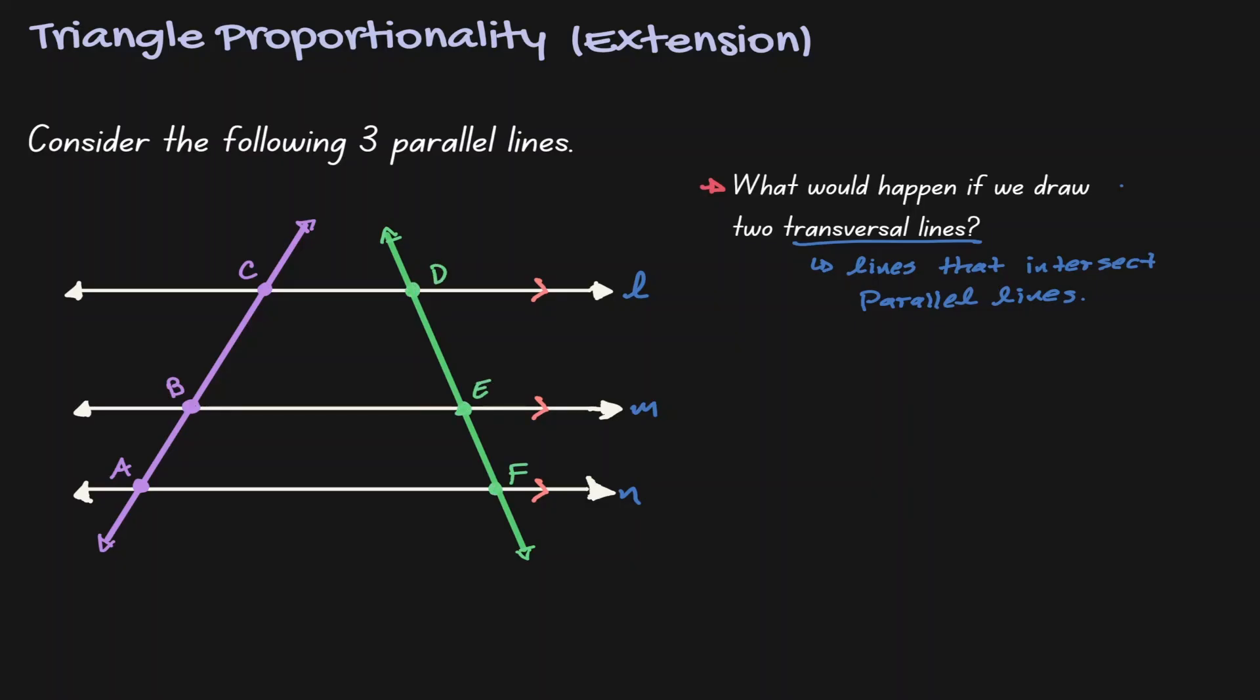Because parallel lines are always equidistant from each other, then therefore these three parallel lines were able to cut the transversal in a proportional way.